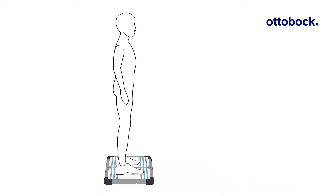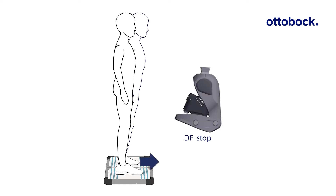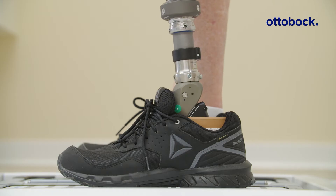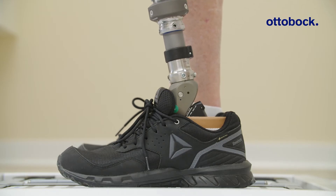If the user has the feeling of falling forwards, or the dashed dorsiflexion stop line is visible, move the prosthetic foot in the anterior direction. If the user has the feeling of falling backwards, or only the dashed plantar flexion stop line is visible, move the prosthetic foot in the posterior direction.